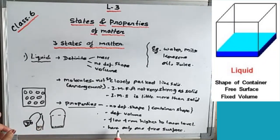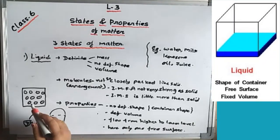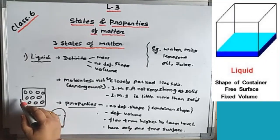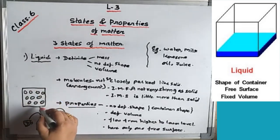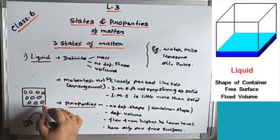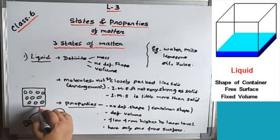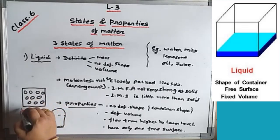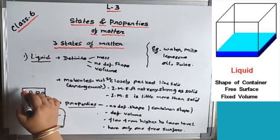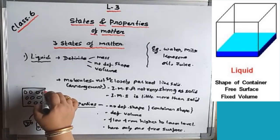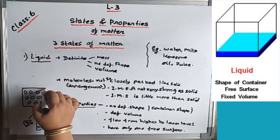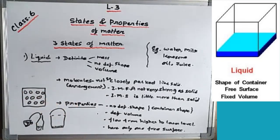Regarding free surface: in solid, there are many free surfaces. But in liquid, the other three sides are closed by the container — only one free surface is present for a liquid.